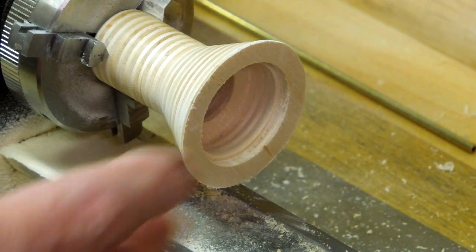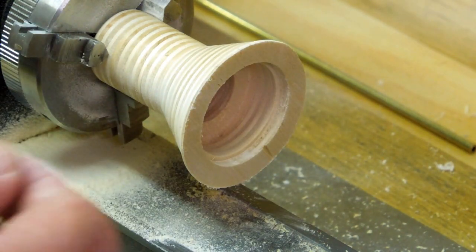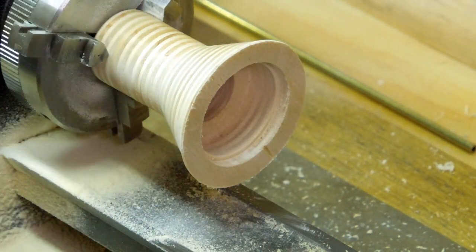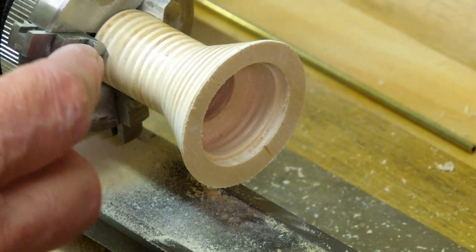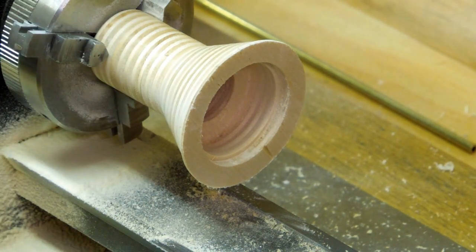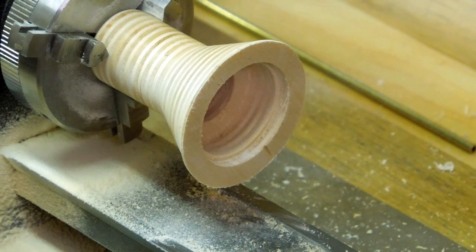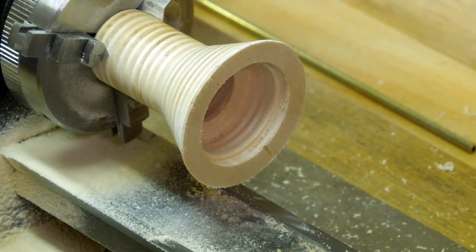After I sanded that I'll just reverse it in the chuck and now this is a little bit touchy because there's not much holding this. I don't want to grip it so tight that it dents the wood. So you just have to be a little bit cautious with this and sand this and round over the edge.